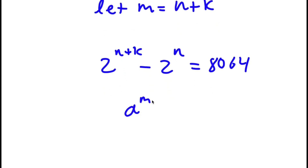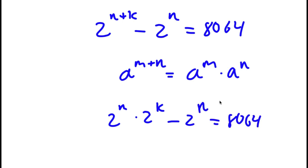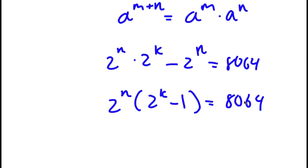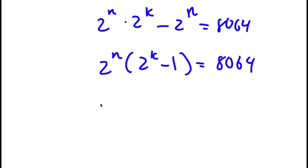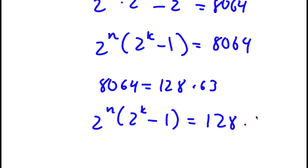Using the property a to the power of m plus n equals a to the power of m times a to the power of n, 2 to the power of n plus k becomes 2 to the power of n times 2 to the power of k, minus 2 to the power of n equals 8,064. Factoring out 2 to the power of n gives 2 to the power of n times 2 to the power of k minus 1 equals 8,064. And 8,064 equals 128 times 63, so I have 2 to the power of n times 2 to the power of k minus 1 equals 128 times 63.